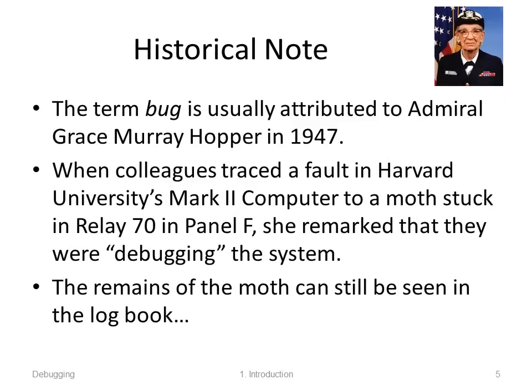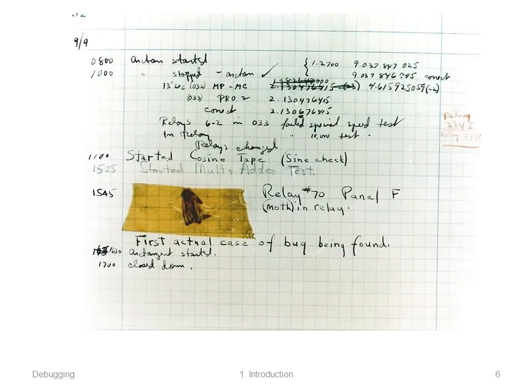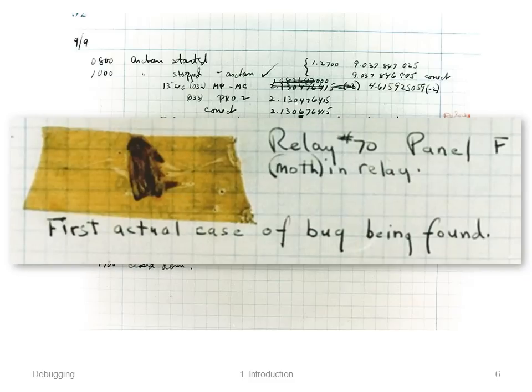A quick historical note: the term 'bug' is usually attributed to Admiral Grace Murray Hopper in 1947. She lived to a grand old age. When colleagues traced a fault in the Harvard Mark II computer, they traced the fault to a moth stuck in, apparently really, number 70 in panel F. She remarked that they had succeeded in debugging the system. The remains of the moth can still be seen in their logbook — they carefully logged everything, and there is the moth taped to the middle of the page. 'Relay number 70, panel F. Moth in relay. First actual case of bug being found.'